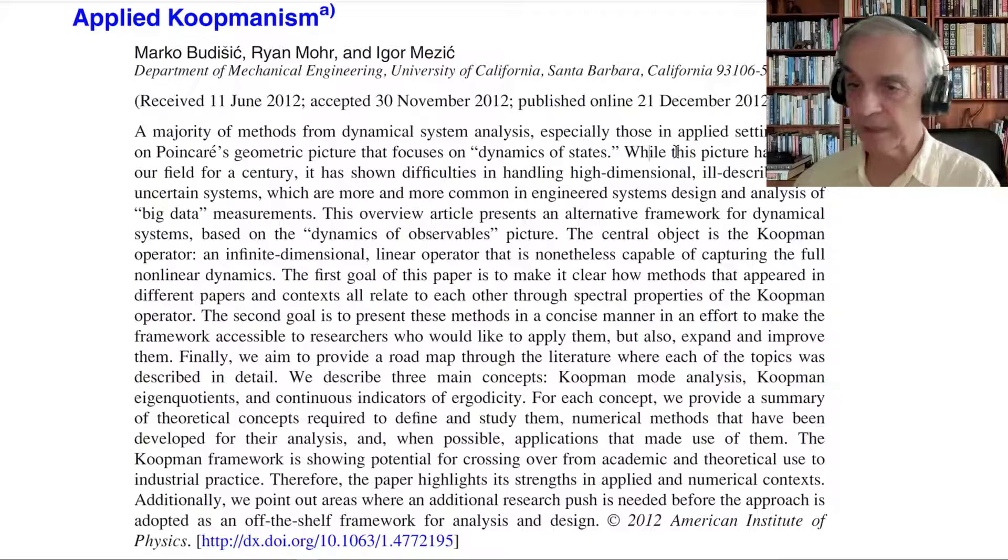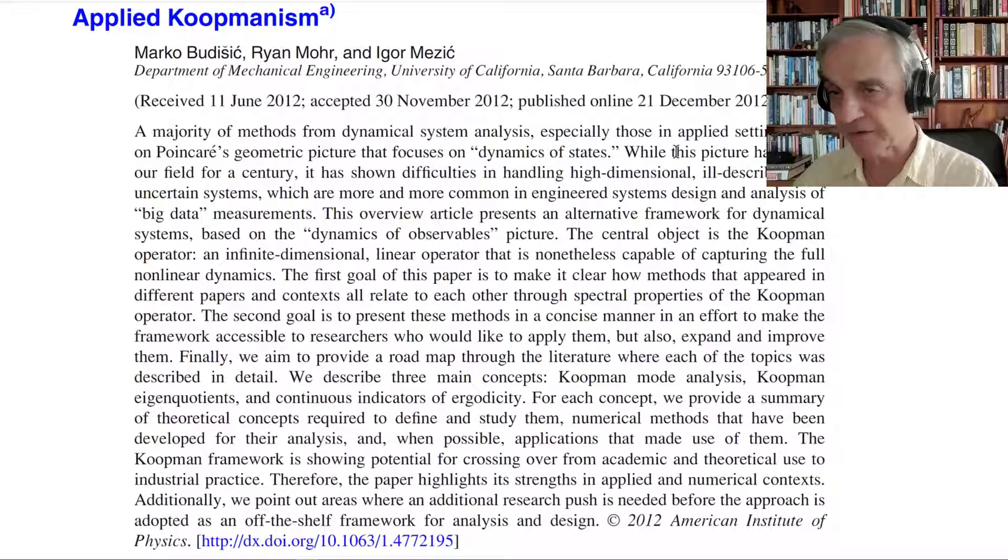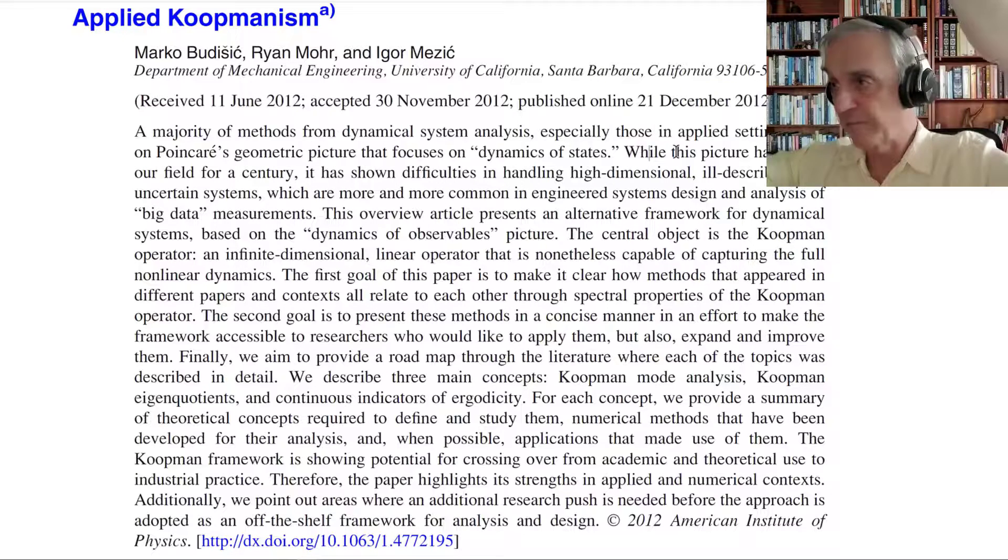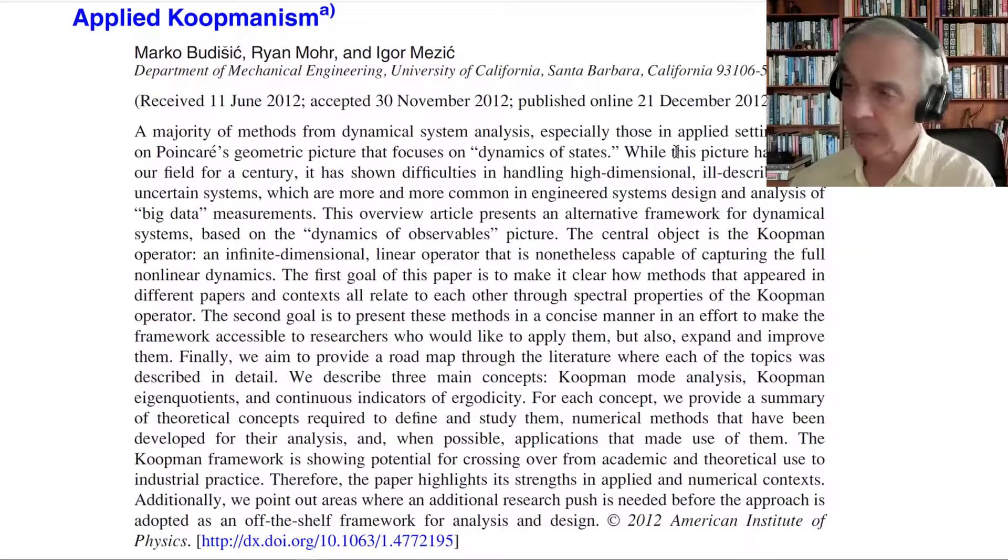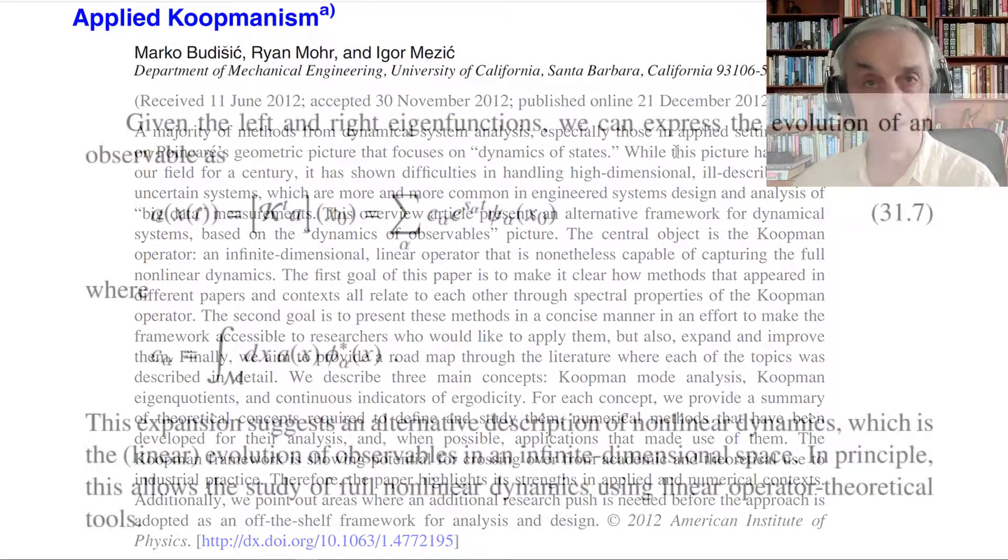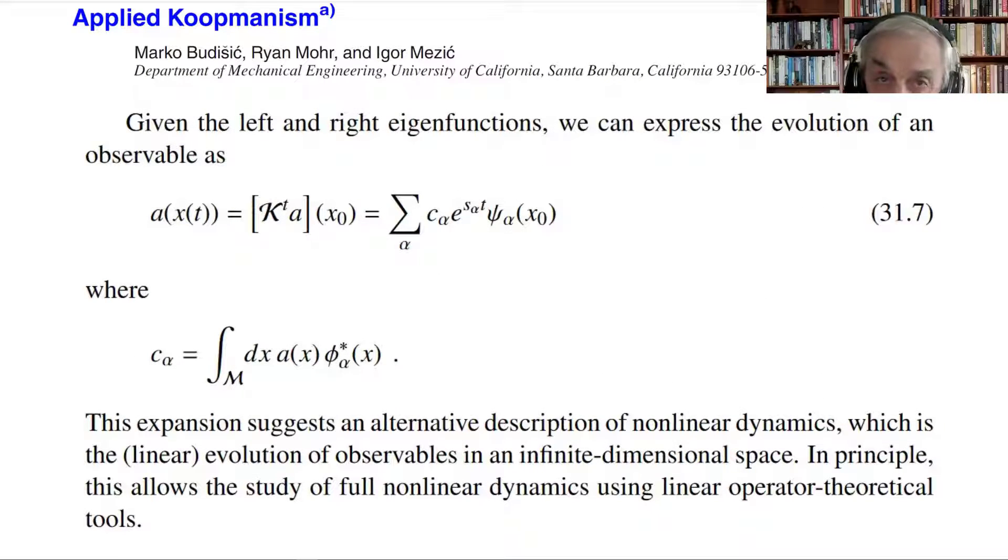And in detail, one has Perron-Frobenius operator, which takes a density of states on state space and evolves every point to a new density. And that is a very convenient formulation of the Poincaré vision of dynamics. You pay a price because the state space is infinite, so you have to work on an infinite dimensional function space, or when we discretize it, a large state space. But what you gain is that operation of dynamics can be visualized as an operator, linear operator, or a matrix when you discretize. And that's what our Perron-Frobenius is.